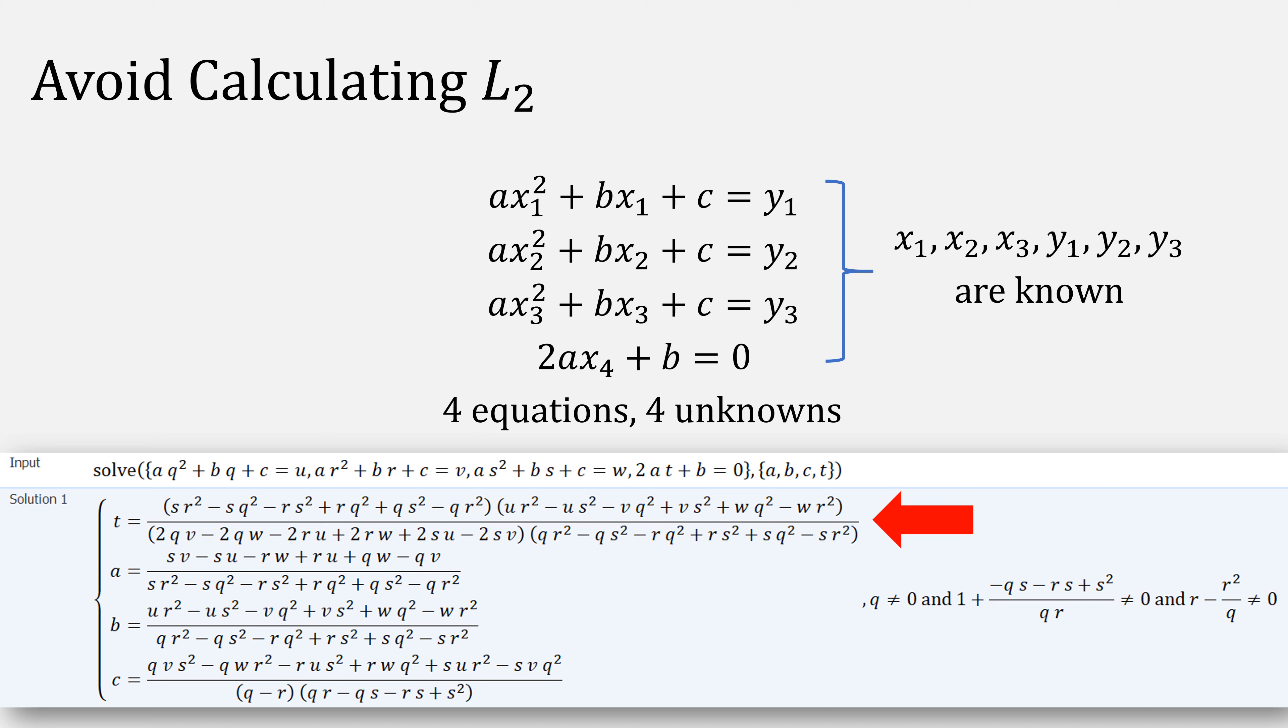Jarratt actually figured out a more efficient way to do this without computing L2 and its derivative every time. Using this system of equations, we can make sure that our parabola goes through our same three test points and that the derivative at our next point will be zero. Recall that our x's and y's are actually known. This gives us four equations and four unknowns. Plugging that into a solver, we get this equation for our next value for x.